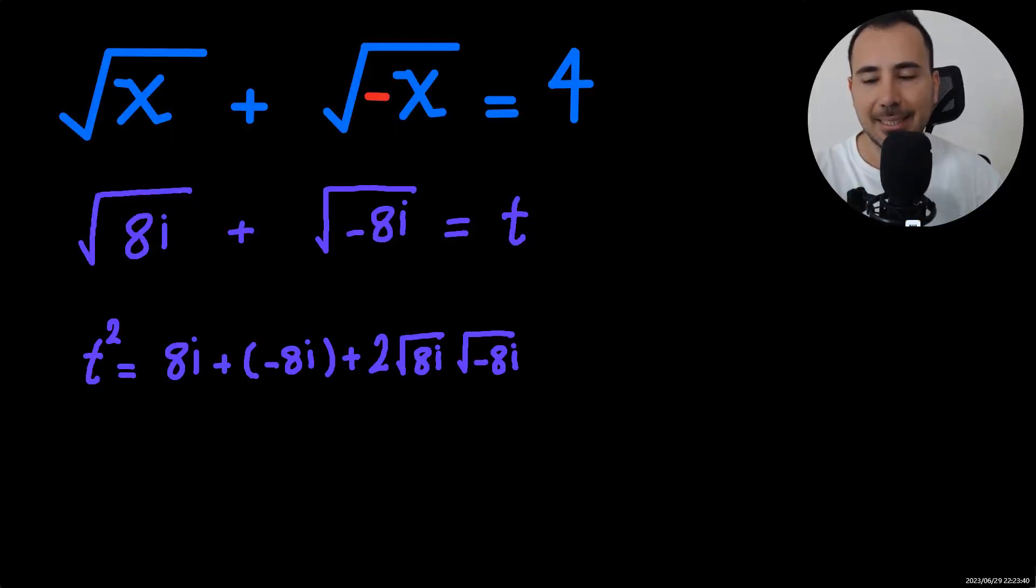So again, the same steps, 8i and negative 8i will be cancelled. So t squared will be 2 times negative 64i squared.